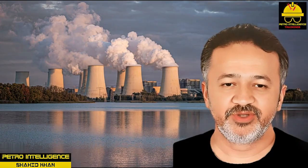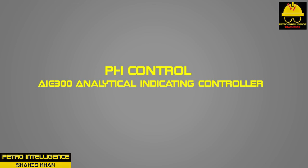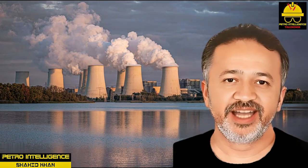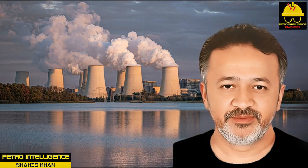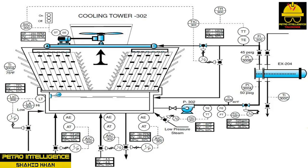Analytical control features on the cooling tower include system pH control AIC-300, an analytical indicating controller. The purpose of this controller is to control the pH inside the cooling water basin. The pH in the cold water basin has a tendency to increase in alkalinity. The control set point is 7.8 pH. AIC-300 continually analyzes the pH in the basin and adds small amounts of acid to maintain operational requirements. The cooling tower specification range is 7.6 to 8.4 pH on water in the recirculation system.